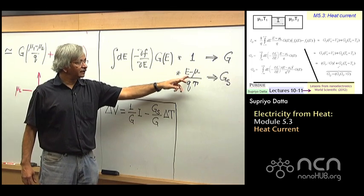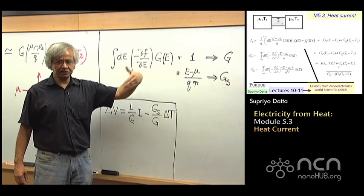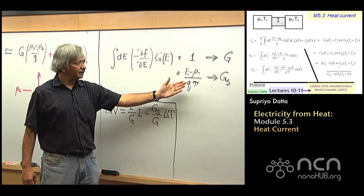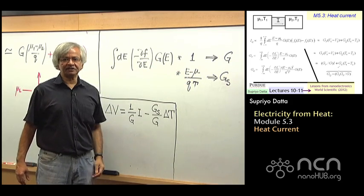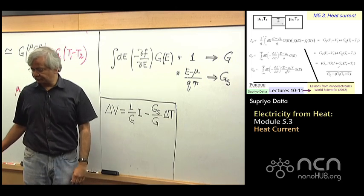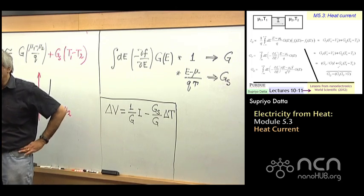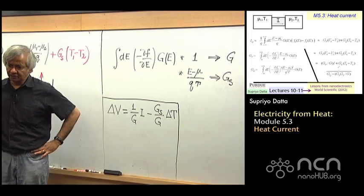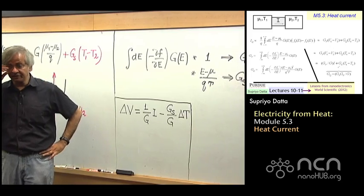And this factor, however, interestingly, actually changes sign at e equals mu. And thereby can actually give you two different signs for gs. And that is the physical thing that we had mentioned before, that there are two types of conductors, some of which have a positive gs and some of a negative gs.